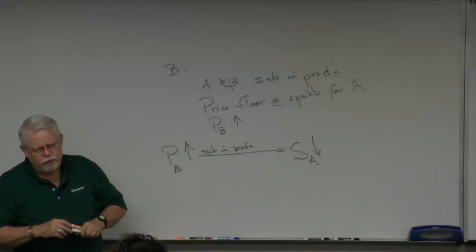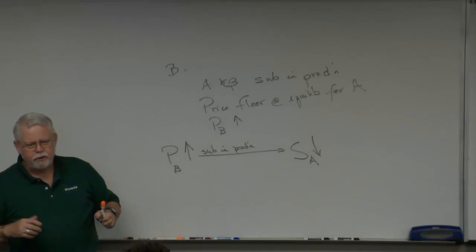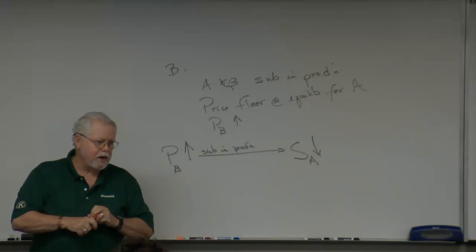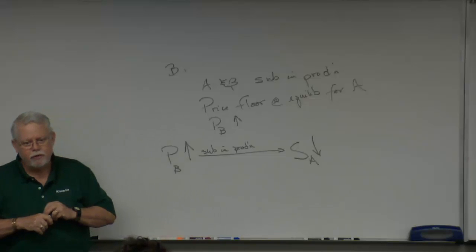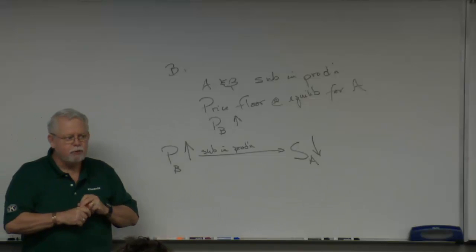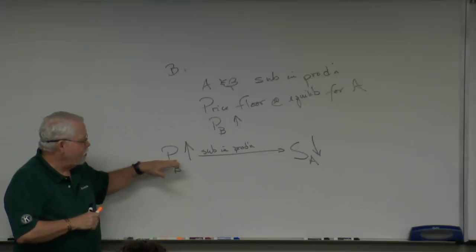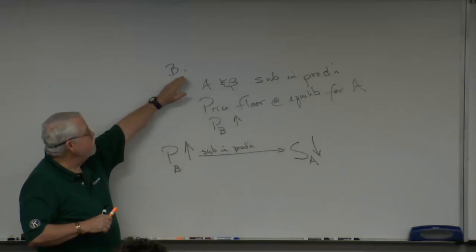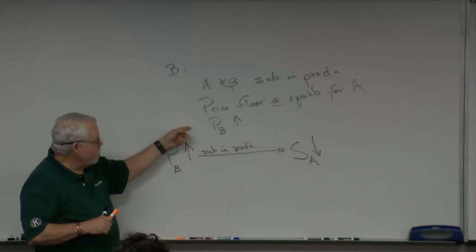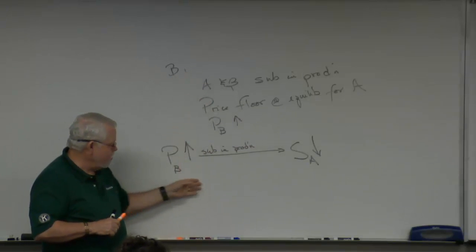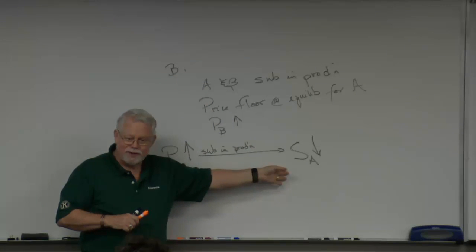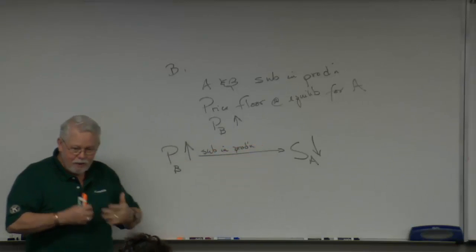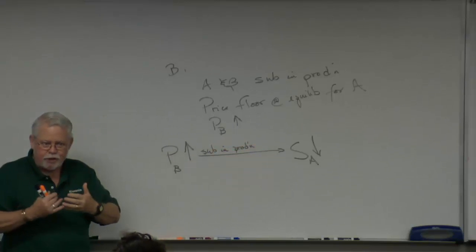Today is Tuesday, the 5th of June. We are here for microeconomics — it's a review session in B12. We are talking about substitutes in production. We've taken Appendix V question number one, put it on the board, and reminded ourselves about the rule about substitutes in production, then went through the logic of it all.